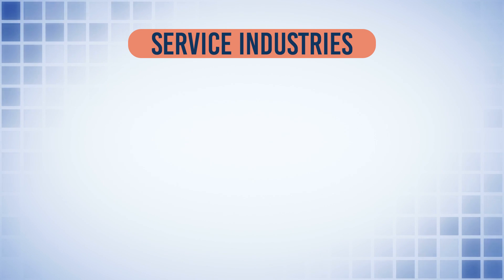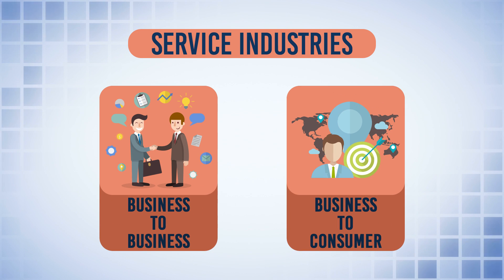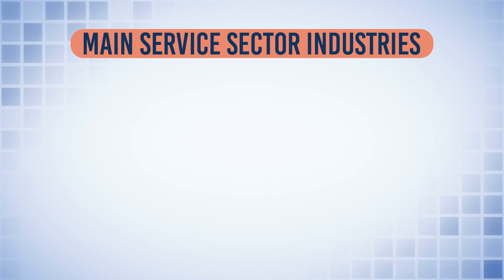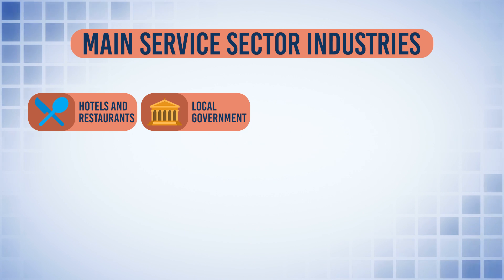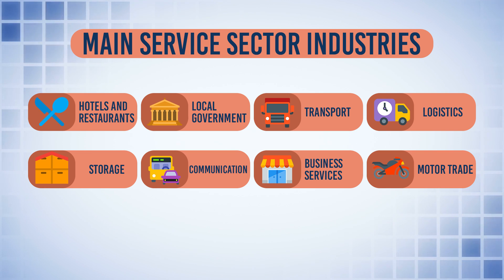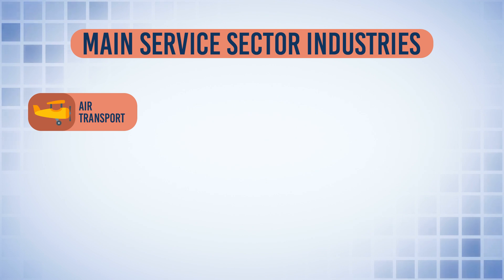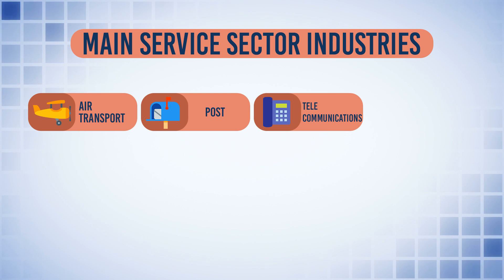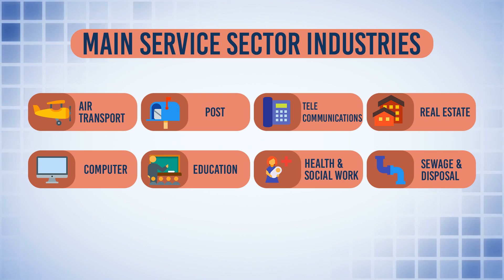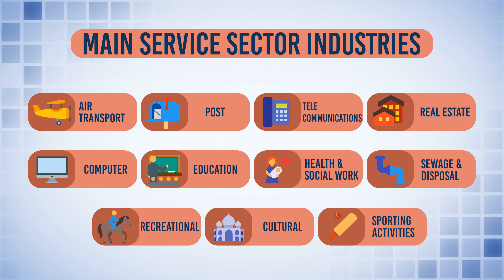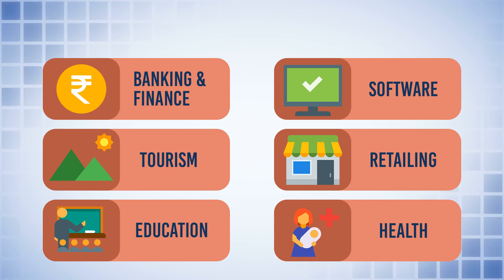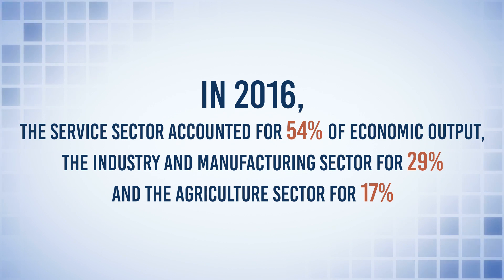Next, we look at service sector industries. Services are part of the tertiary sector of the economy, with many different industries focusing on business-to-business or business-to-consumer products. At present, the service sector gives the maximum ratio in India's GDP. The main service sector industries in India include hotels and restaurants, local government services, transport, logistics, storage and communication, business services and finance, motor trade, wholesale and retail traders, land and air transport, postal and telecommunications, courier services, real estate, computer and related activities, education, health, social work, recreational, cultural and sporting activities, and more. The majority of Indian GDP comes from service industries such as banking and finance, software, tourism, retailing, education, and health. In 2016, the service sector accounted for 54% of economic output.